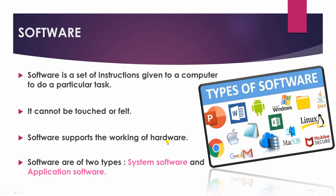Software is of two types: system software and application software. Here you can see in this image what is written — types of software — so there are many types of software.